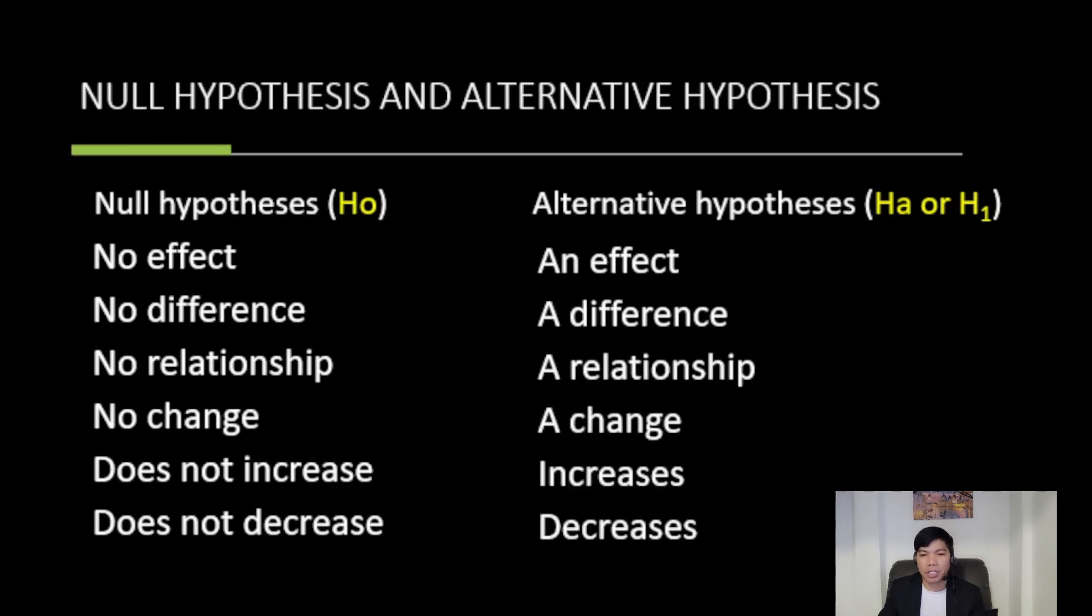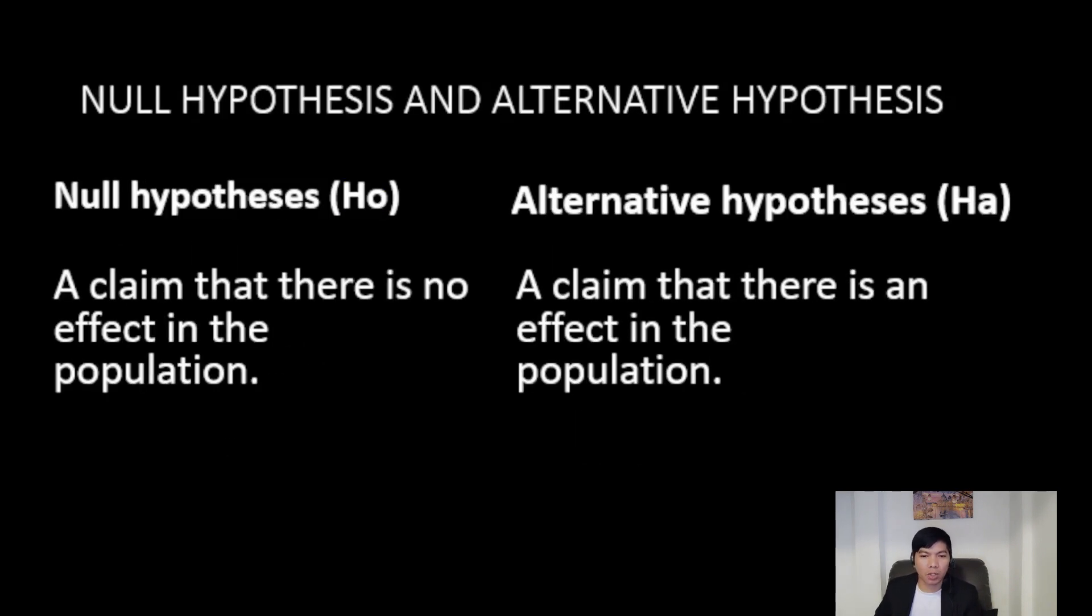When dealing with population mean, the null hypothesis often assumes that the population mean is equal, greater than or equal, or less than or equal to a specific value denoted as μ.